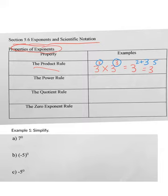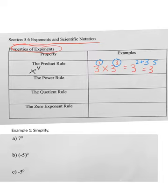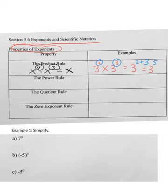You probably remember this rule from algebra. With variables like X, if I had X to the 4th times X to the 3rd, the base is X and you add the exponents: 4 plus 3 equals 7, so that would be X to the 7th power.